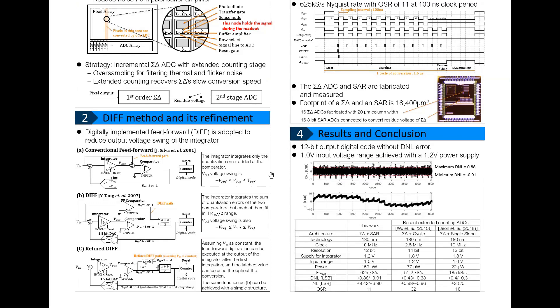Then DIFF was reported. It replaces the feedforward path with a digital component to reduce complexity in the analog part. We defined the DIFF with the assumption that the input signal is constant. Then the digital feedforward can be achieved by adding only a latch and small logic circuit, which is much simpler than previous DIFF.